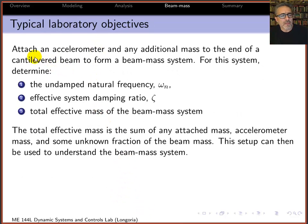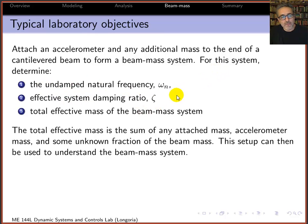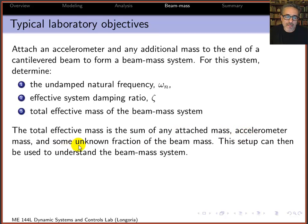A typical laboratory objective: attach an accelerometer on the beam along with any additional mass — so the lumped mass is the accelerometer mass plus any extra mass. You'll form a beam-mass system and find the natural frequency, damping ratio, and total effective mass. The total effective mass is the sum of the lumped attached mass — accelerometer mass — plus some unknown fraction of the beam mass, which we need to determine.